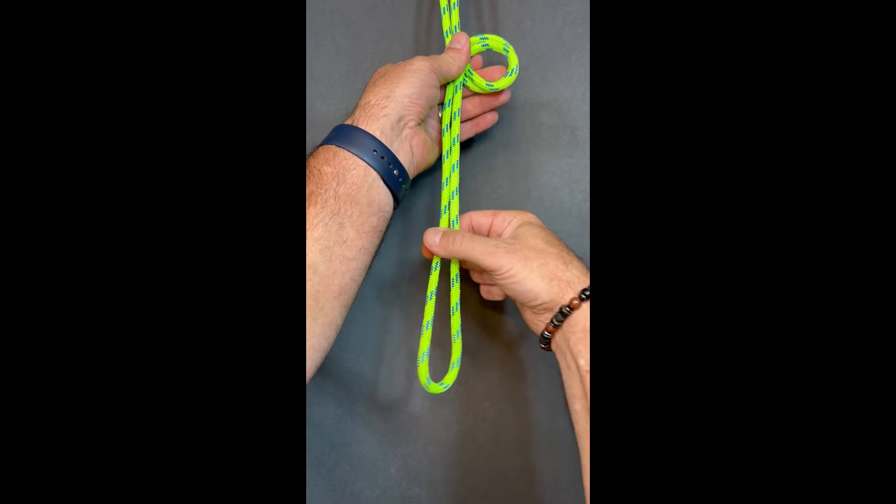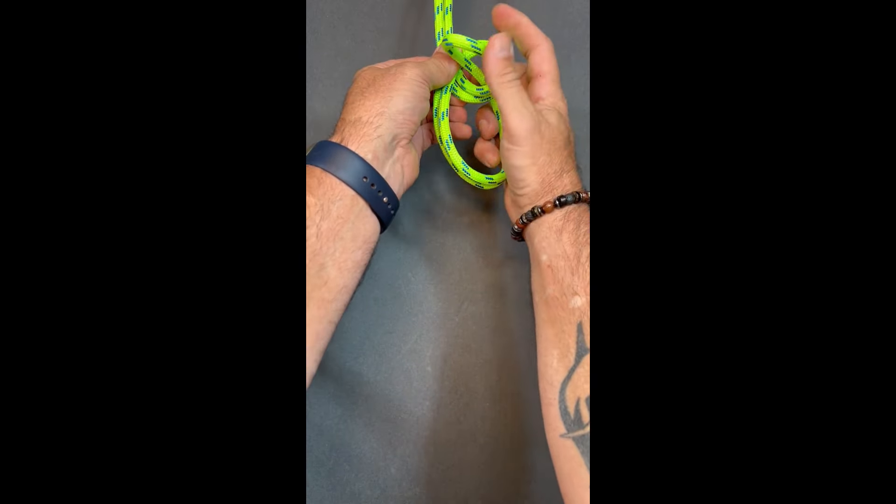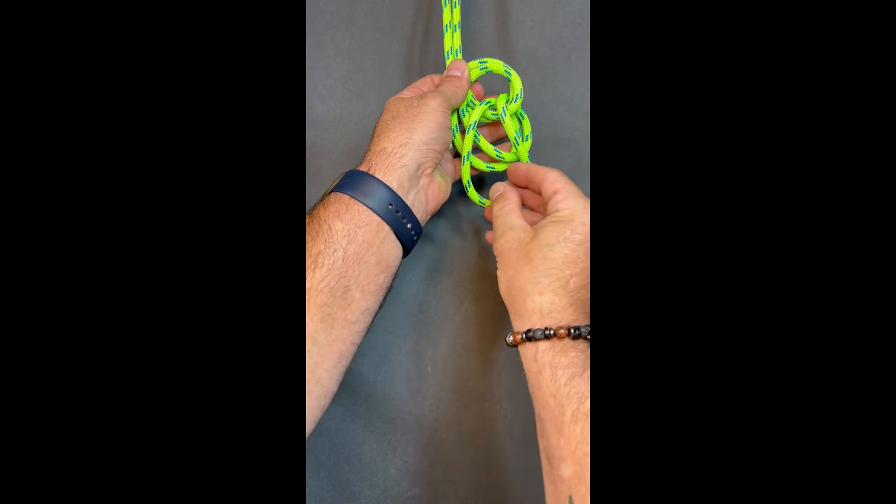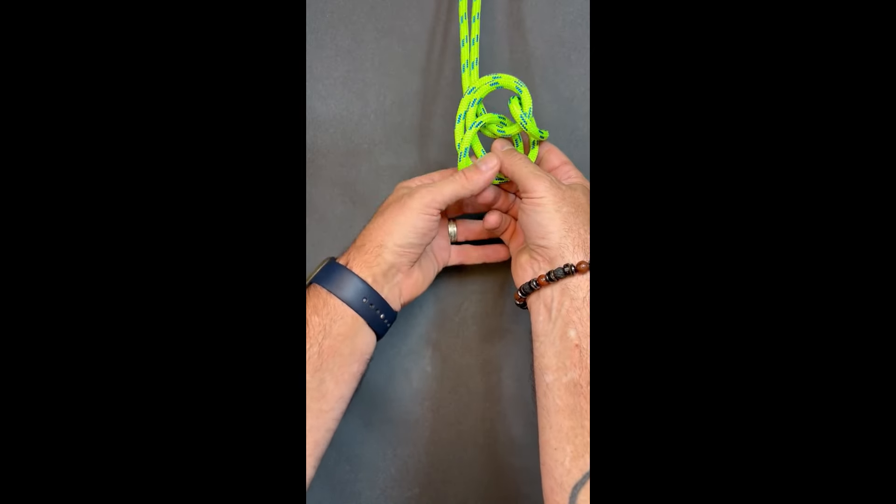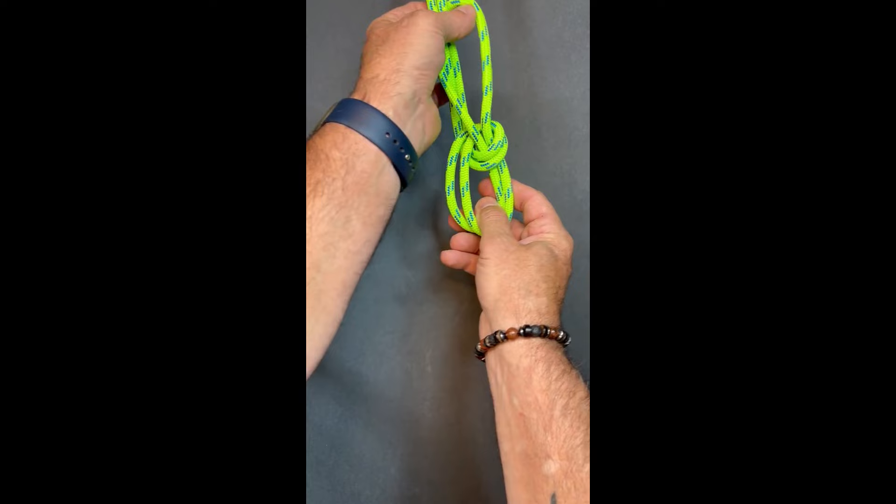When we've created our loop, we'll take this bite of rope and pass it up through the loop. When we get to here, we're going to open up the bite and capture this entire knot, and then we'll pull it up to the top of our knot.